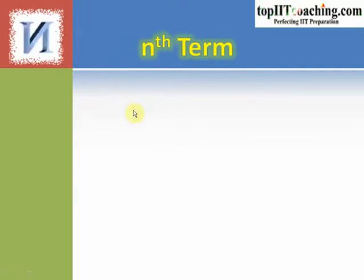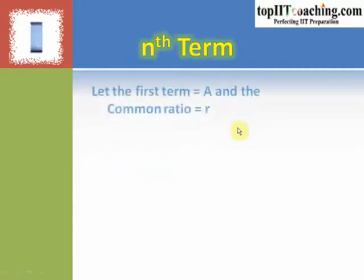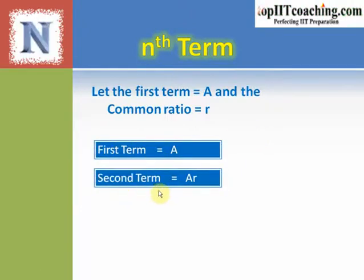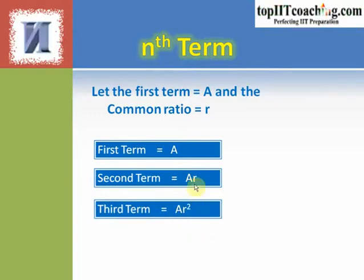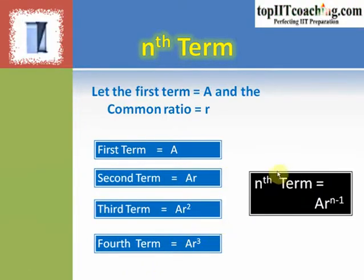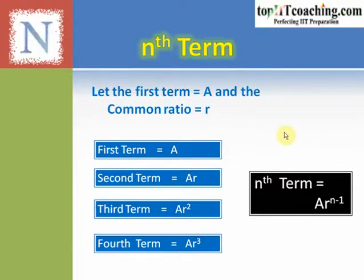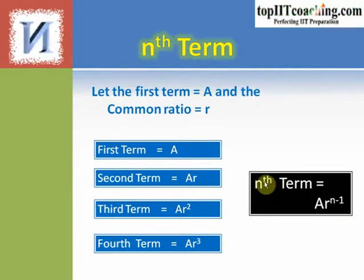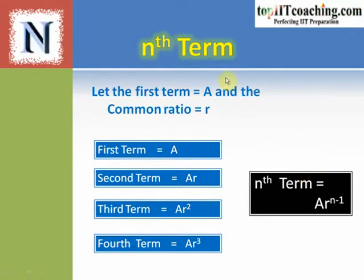For a GP, let's derive the formula to calculate the nth term. If the first term is A and the common ratio is R, then the first term is A, the second term is AR, the third term is AR², the fourth term is AR³, and so on. Thus the nth term is equal to A into R to the power of N minus 1. Note that the exponent of R is N minus 1, which is 1 less than N.